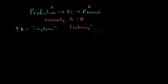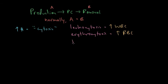So we can have, for example, leukocytosis, which is increased white blood cells, erythrocytosis, which is increased red blood cells, or thrombocytosis, which is increased platelets.